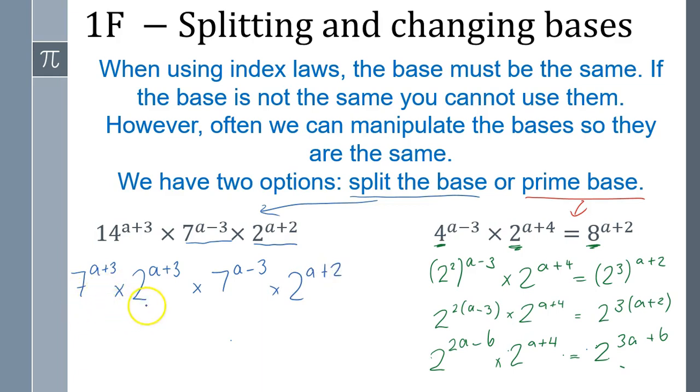Here we couldn't simplify these two because the bases are different, but we could simplify those two. It'll be seven a plus three plus a minus three times two.